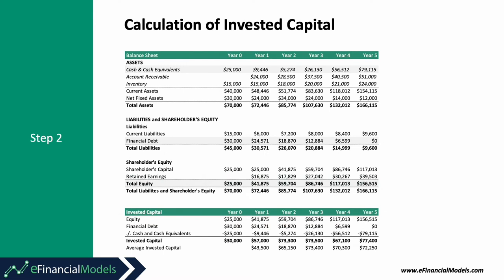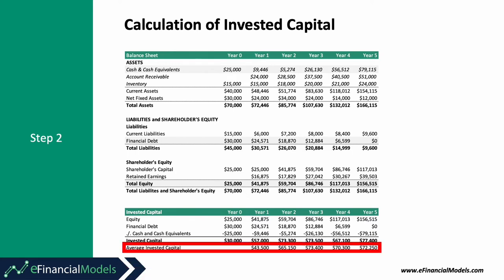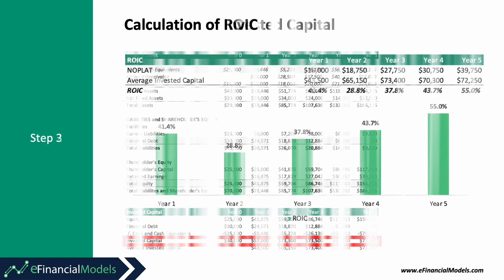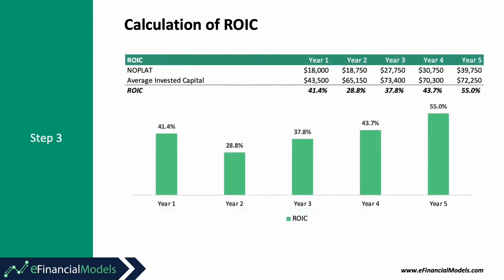Now we need to determine how much capital is invested in the business. We have two sources of capital: equity and financial debt. To calculate invested capital, we add financial debt to the book value of equity capital and assume that cash and cash equivalents can be used to repay the financial debt by netting the debt. We then calculate the average of the invested capital from the beginning and the end of the period. We can now calculate ROIC by dividing NOPLAT by the average invested capital.